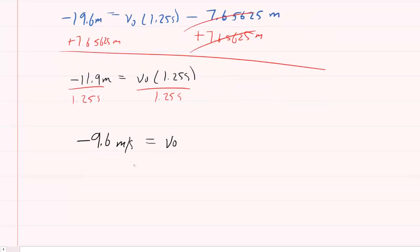But the question wanted the speed that Apple II was released with. So we actually just take the absolute value of this, and then we end up with positive 9.6 meters per second as the speed with which Apple II was thrown.